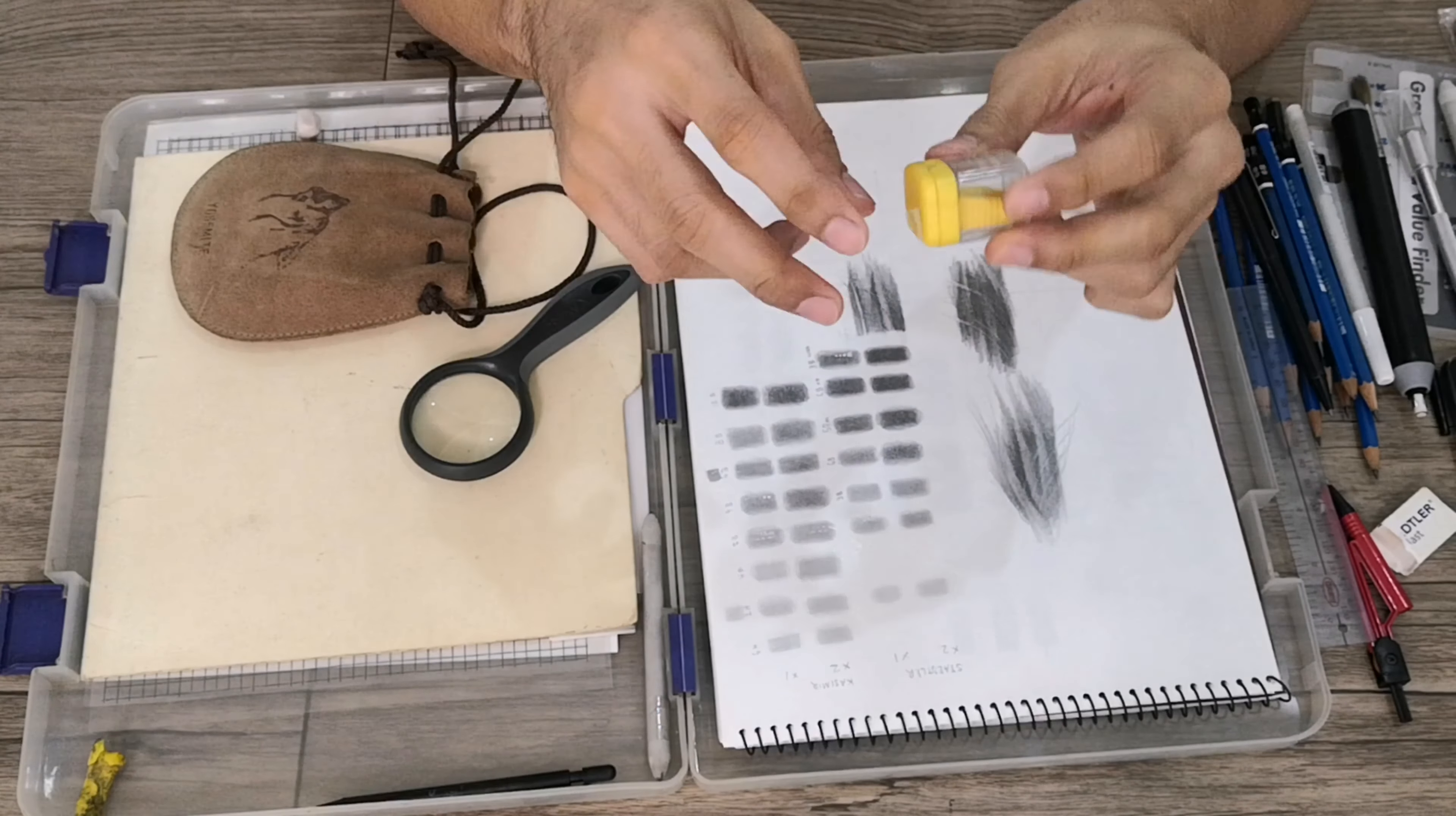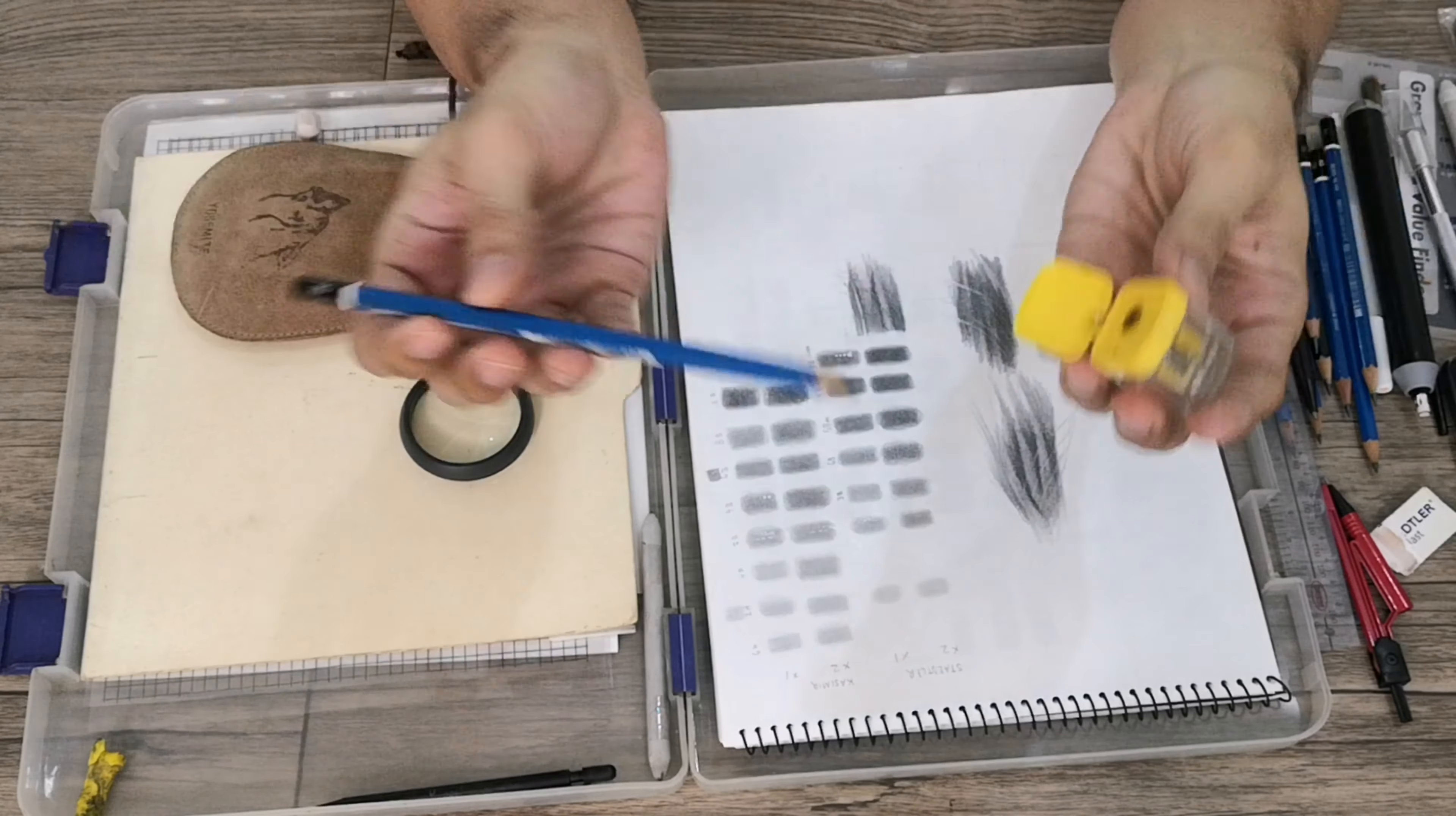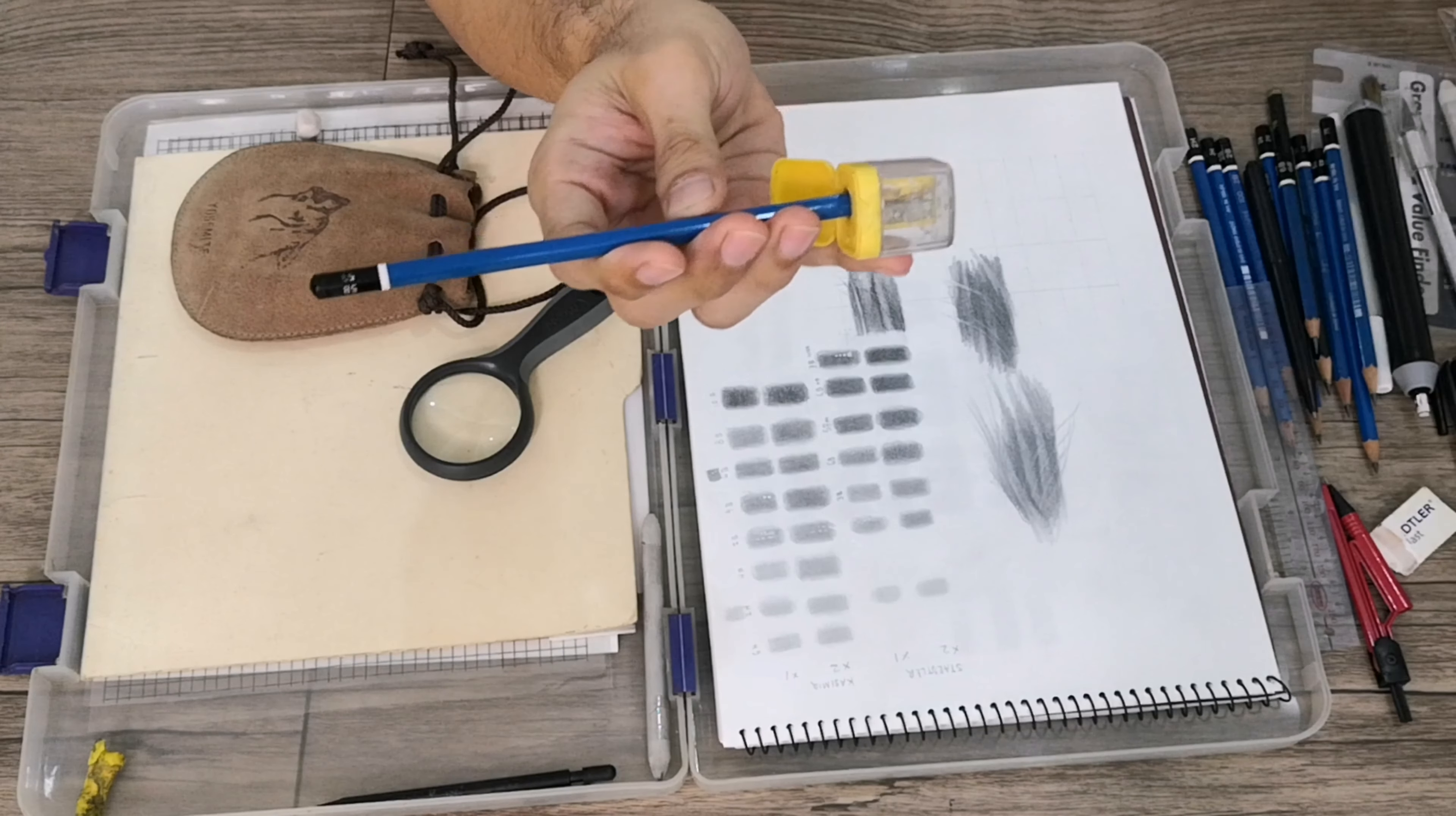Also here I have this very simple sharpener, it's Faber-Castell. This is what I use when I get to sharpen my pencils. My preference is that I do my sharpening before I start my drawing.